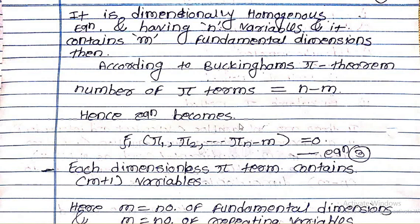According to Buckingham Pi theorem, the number of pi terms equals n minus m. Here n is the number of variables included in the phenomenon and m is the number of fundamental dimensions. So the number of pi terms ranges from pi1 to pi(n minus m). The functionality equation for the pi terms can be written as: f(pi1, pi2, ..., pi(n-m)) = 0, which is equation number 3.